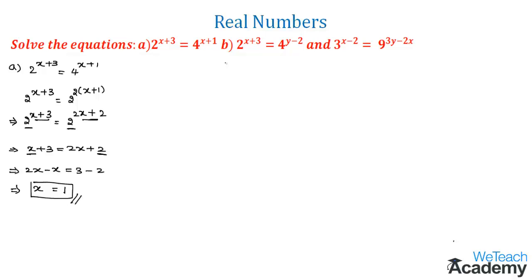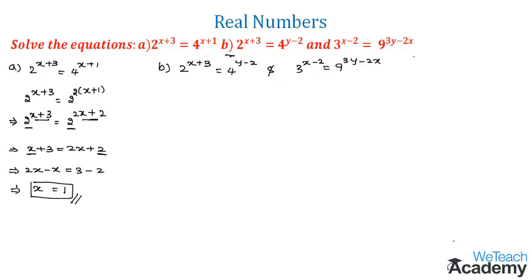Now let us solve the next example. The given equations are 2^(x+3) = 4^(y-2) and 3^(x-2) = 9^(3y-2x). We have to find the values of x and y.